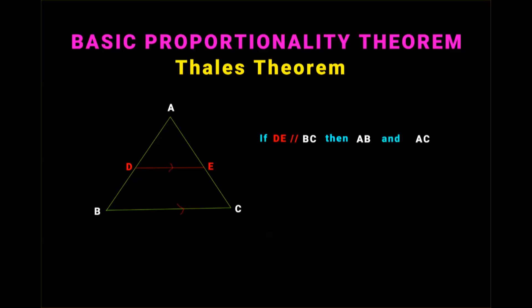The other two sides are AB and AC. That means AB and AC are divided in the same ratio. If DE is parallel to BC, then AB and AC are divided in the same ratio.